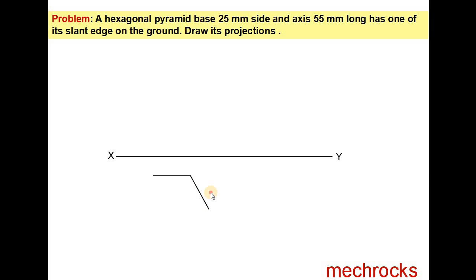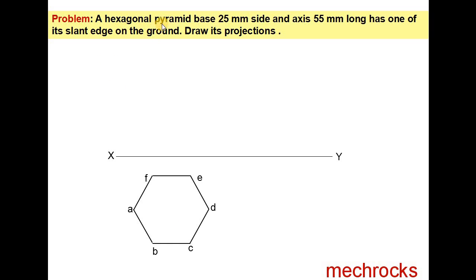The length of this side is also 2.5 cm. Similarly you draw one more side; this angle is 120 degrees and the length is 2.5 cm. Like this you draw the remaining sides also, and name them as A, B, C, D, E, F. Then you have to locate the slant edges. Join AD, CF, and BE. These are the slant edges. The intersection point is O.